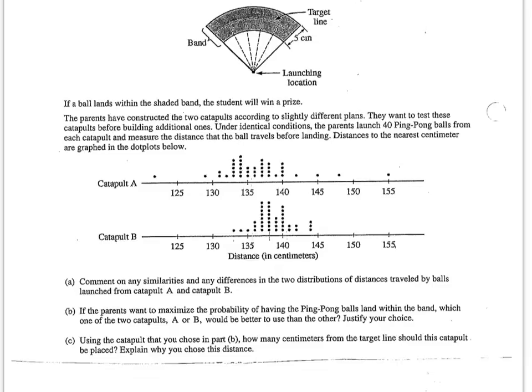Part B, if the parents want to maximize the probability of having the ping pong ball land within the band, which one of the two catapults would be better to use? Well, just by looking at these two catapults, I'd want to use the most consistent catapult. So it looks to me like catapult B, it has much less spread. It has a much smaller range. I think the standard deviation would be much smaller than catapult A.